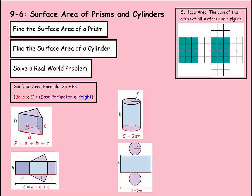We're on Lesson 6 of Chapter 9, which is the Surface Area of Prisms and Cylinders. The word to learn today is Surface Area, which is the sum of the areas of all surfaces on a figure.